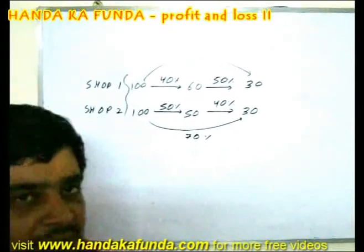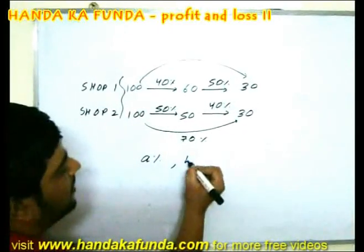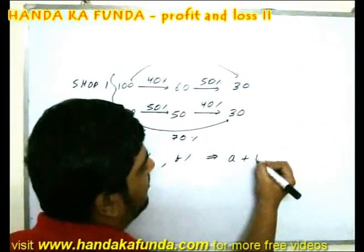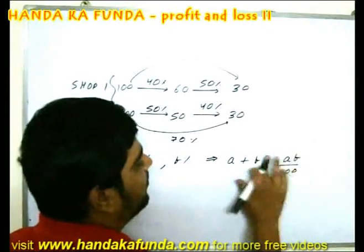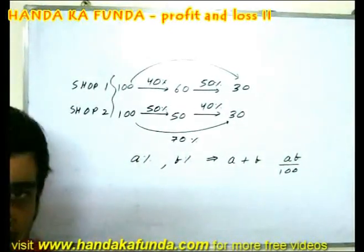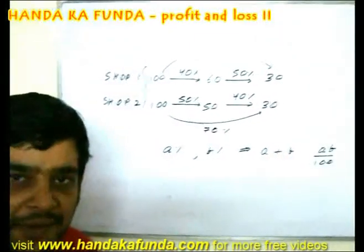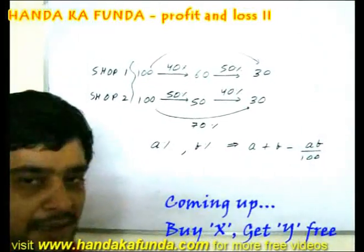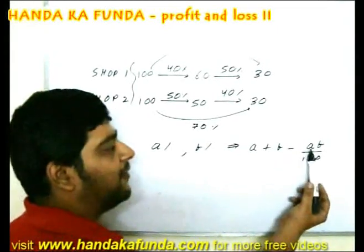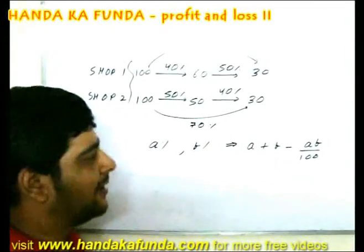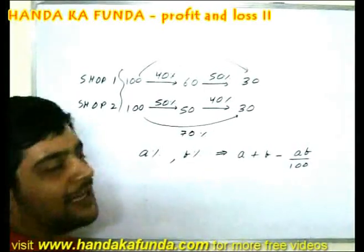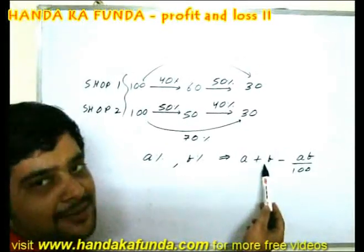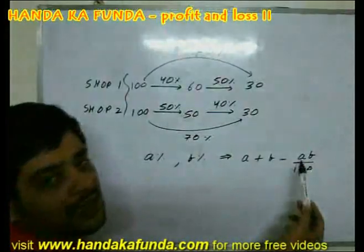If two discounts of A% and B% are offered, the net discount is given by A plus B minus AB divided by 100. Let's verify: 50 plus 40 is 90, minus 50×40/100 which is 20, giving 70%. As you can see, the order does not matter because A plus B equals B plus A, and A times B equals B times A.